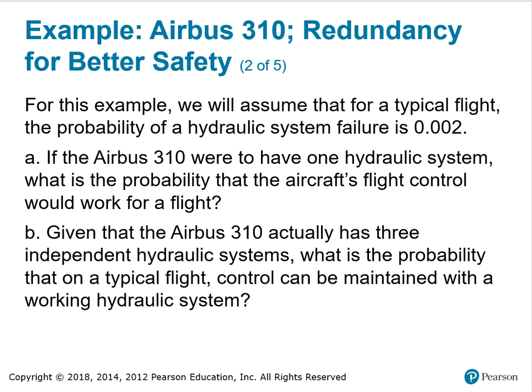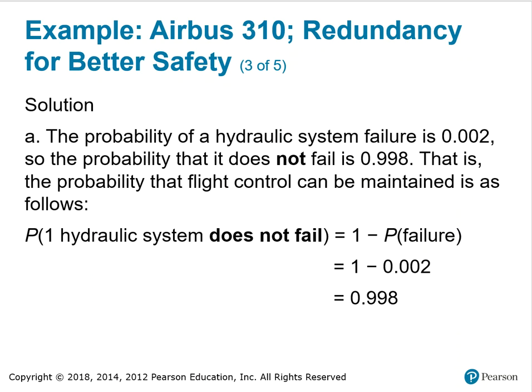For a typical flight, the probability of a hydraulic system failure is 0.002. If the Airbus 310 were to have one hydraulic system, what is the probability that the aircraft's flight control would work for a flight? The probability of a hydraulic system failure is 0.002, so the probability that it does not fail is the complement: 1 − 0.002 = 0.998. That is the probability that flight control can be maintained. The probability one hydraulic system does not fail equals one minus the probability that it does fail, yielding 0.998.